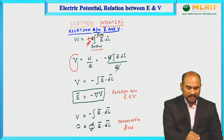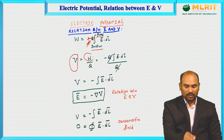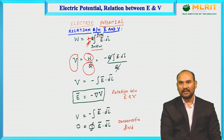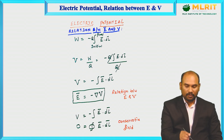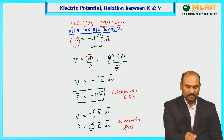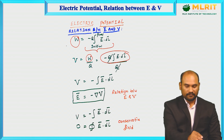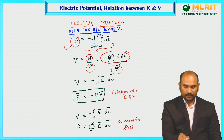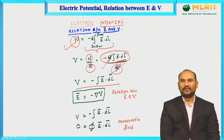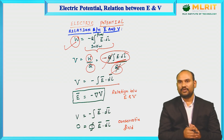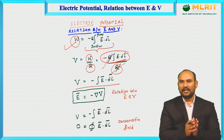Electric potential V is equal to the amount of electric work done in moving a unit electric charge, so V equals W divided by Q. We know W is given by minus Q times the integral of E dot dL. Substituting and cancelling Q, we get V equals minus the integral of E dot dL. We use the polarity — positive if the system is doing the work, negative if you are doing the work — just to distinguish the scenario. There are only two possibilities.